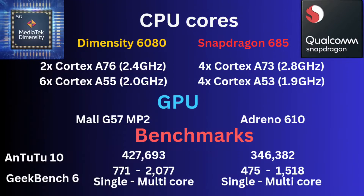When it comes to CPU, the Dimensity 6080 has the better CPUs — there's really no question. It has two Cortex-A76 CPUs. At one point Cortex-A76 cores were considered flagship quality, but in 2024 they're now considered lower mid-range. The Snapdragon 685 has Cortex-A73 cores, which date back to 2016–2017. They're clocked to their max, but that's not enough to offset the performance gap from the A76 cores.